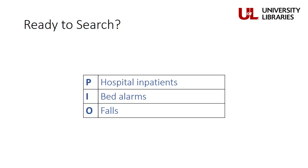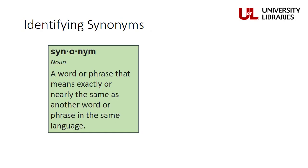So now that we have our search terms, we're ready to jump in and do a search, right? Wrong. We still have some minor work to do. To build an effective search, you need to identify synonyms.